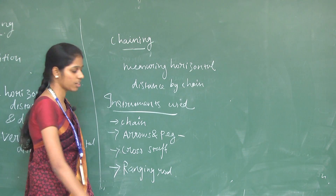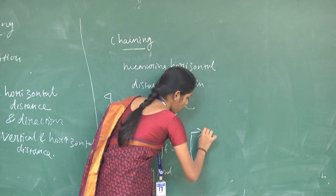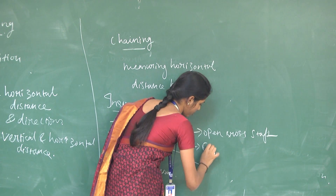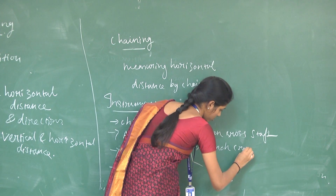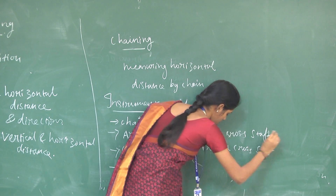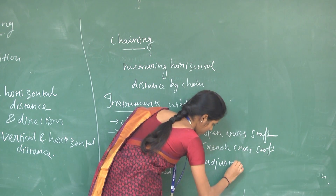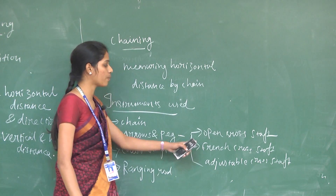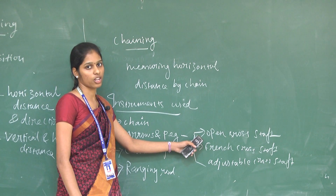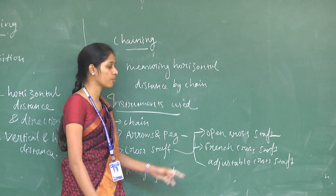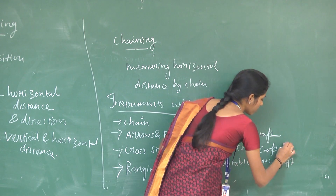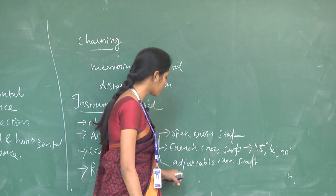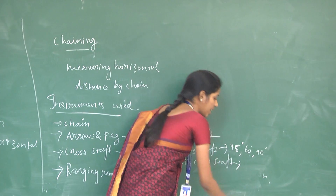Cross staffs are classified into three types: open cross staff, French cross staff, and adjustable cross staff. With an open cross staff, we can make 90-degree perpendicular offsets. With a French cross staff, we can make survey lines at 45 degrees, 60 degrees, and 90 degrees. With an adjustable cross staff, we can set it at any angle.